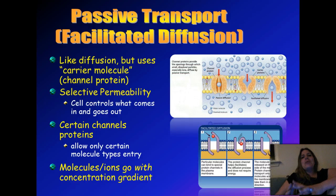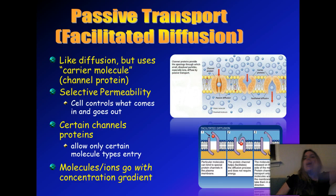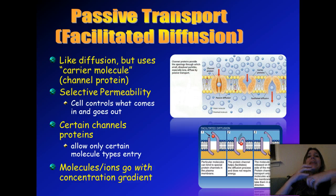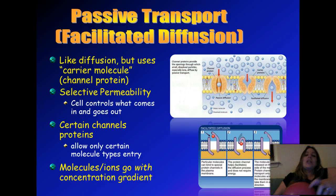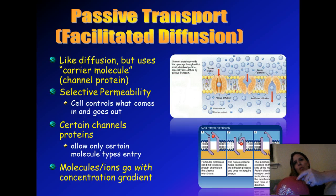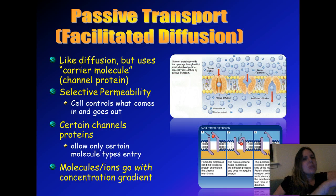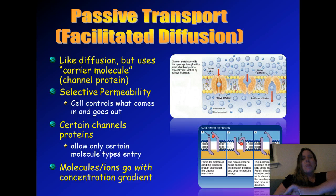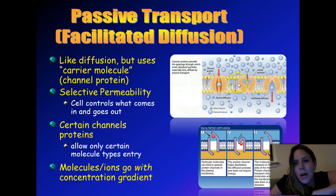Sometimes things need a little help crossing the plasma membrane — a concentration gradient alone isn't enough. This happens when molecules are too large, like proteins, to just cross that phospholipid bilayer on their own. They need the help of what are called protein channels or protein carrier molecules — those proteins embedded into the phospholipid bilayer. A channel protein helps a big molecule pass through to get inside or outside the cell.